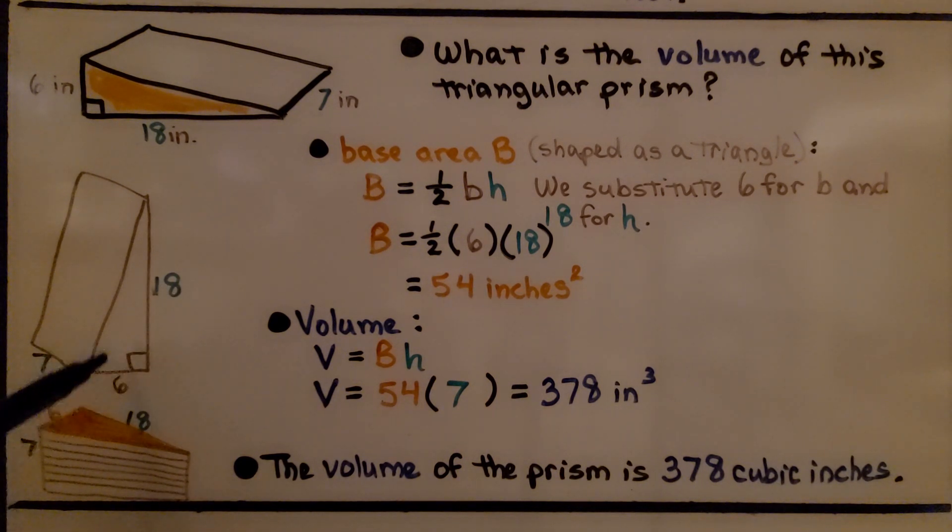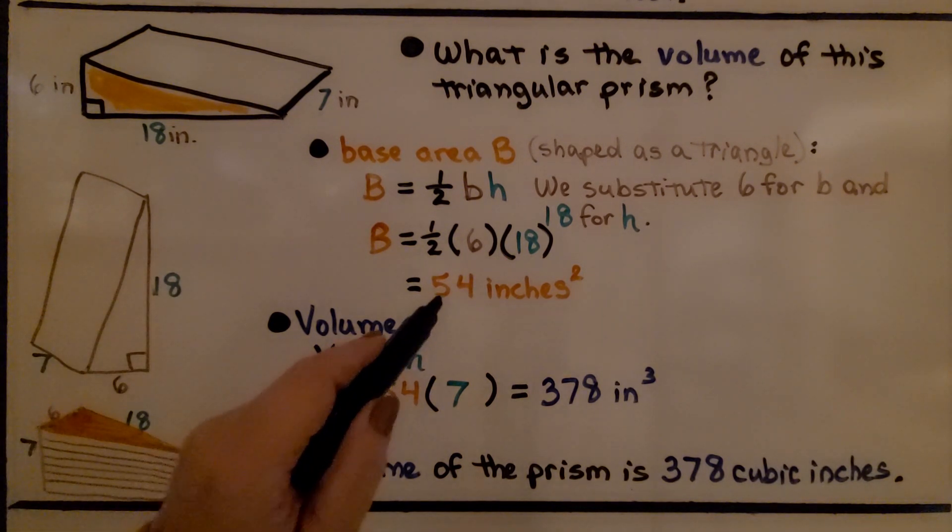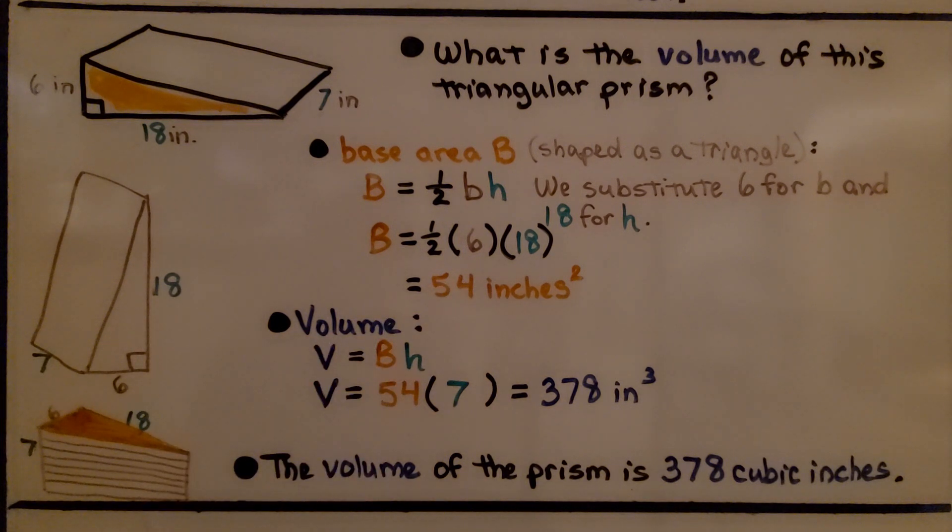We do ½(6)(18) = 54 inches squared for our triangular base area. The volume equals that base area times the height of 7. Imagine we've got this base area of 54 inches squared, and now we have 7 layers of it. 54 × 7 = 378 inches cubed. The volume of the prism is 378 cubic inches.